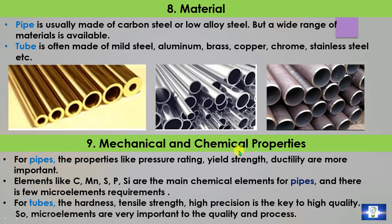Point 9: Mechanical and Chemical Properties. For pipes, pressure and flow are critical, so properties like pressure rating, yield strength, and ductility are more important. Elements like molybdenum, sulfur, phosphorus, and silicon are the main chemical components for pipes, with few micro-element requirements. For tubes, hardness, tensile strength, and high precision are key to quality, so micro-elements are very important to the quality and process — more so than for pipes.